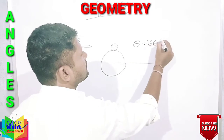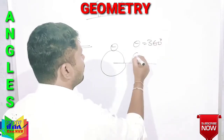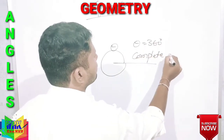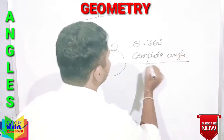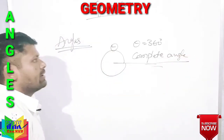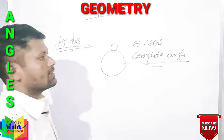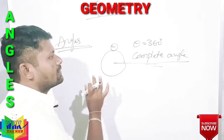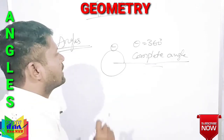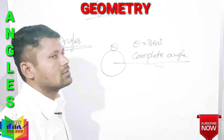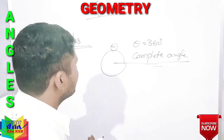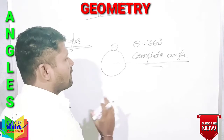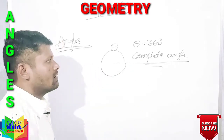If theta equals 360 degrees, this is called a complete angle. These are the basic types of angles we use: acute angle, obtuse angle, straight angle, reflex angle, and complete angle.